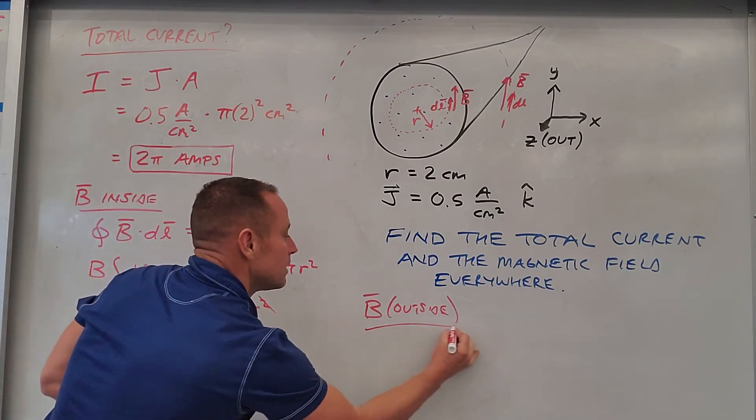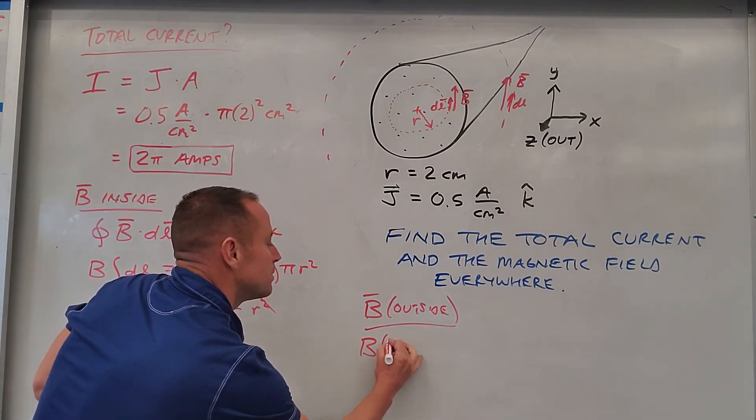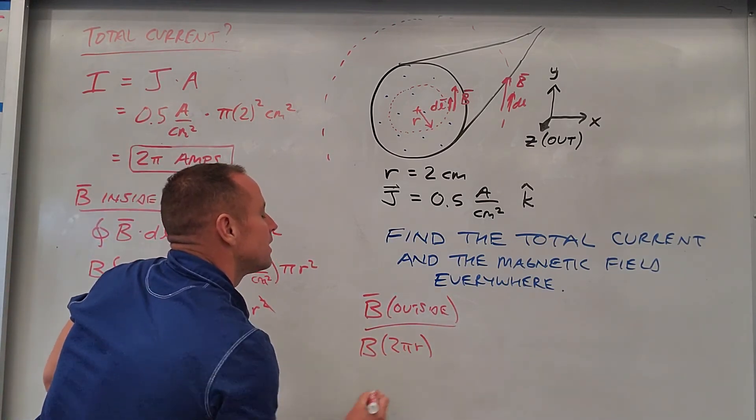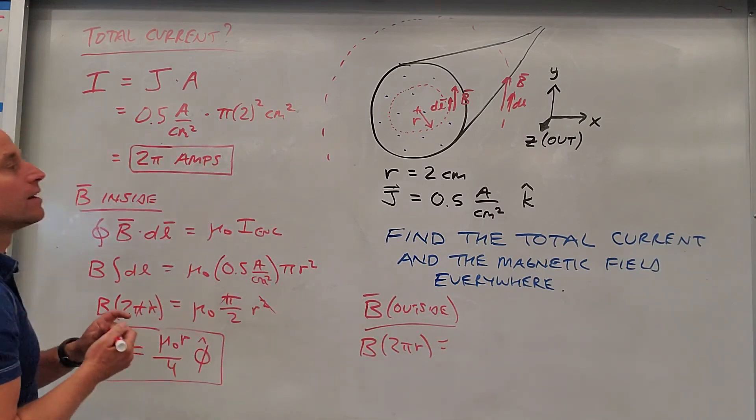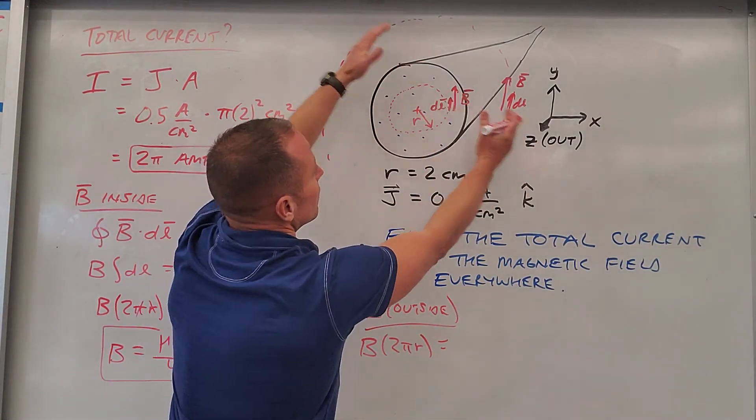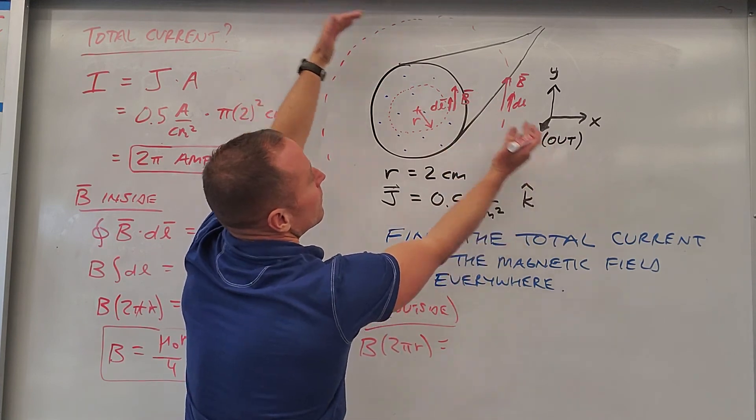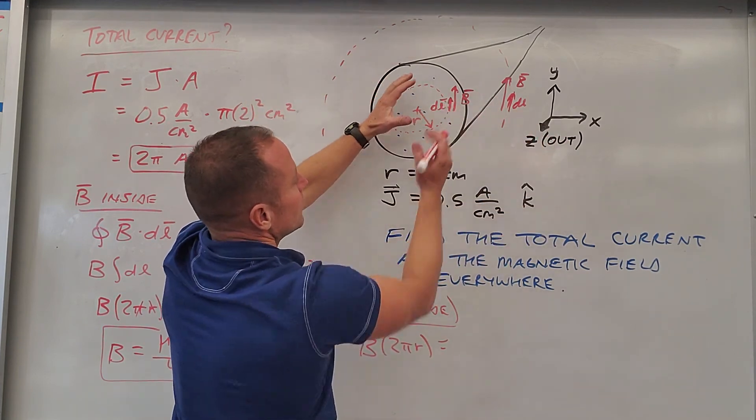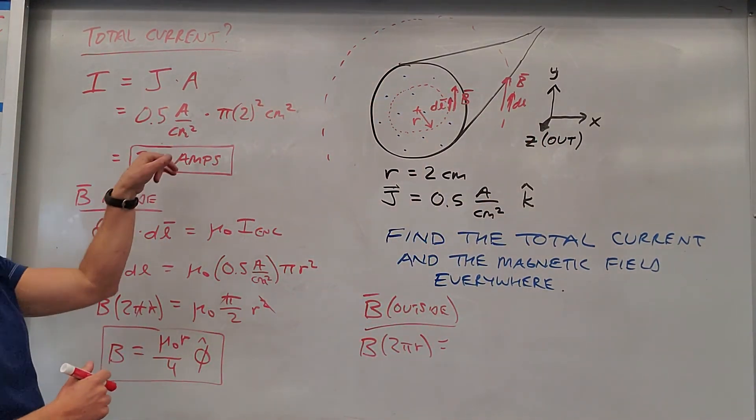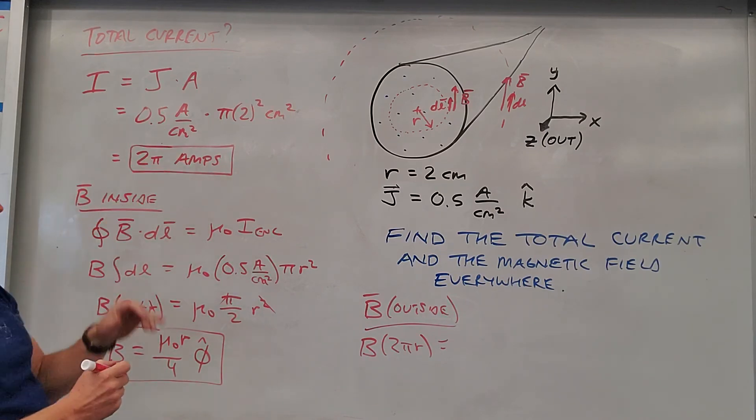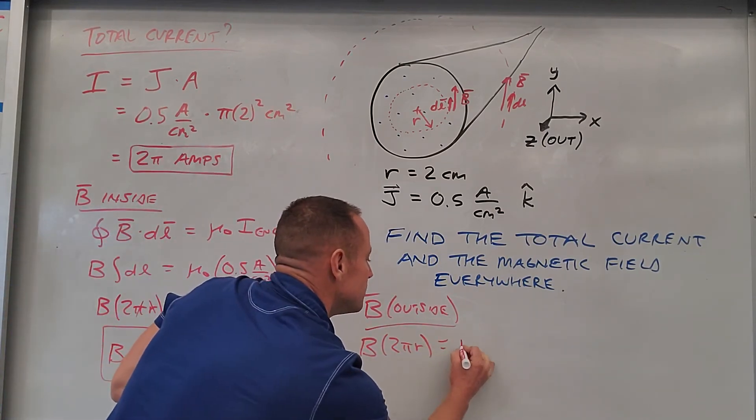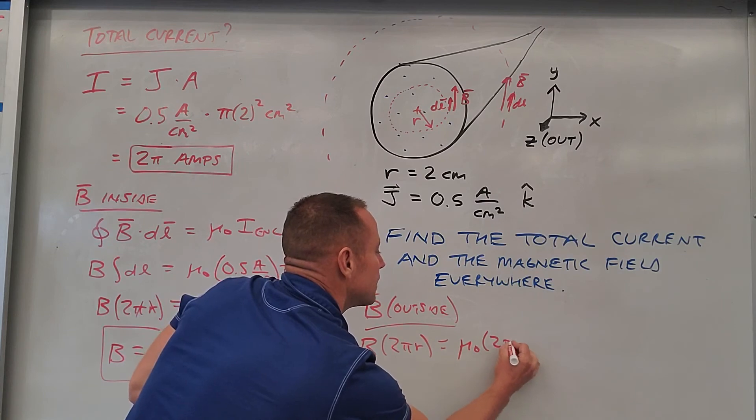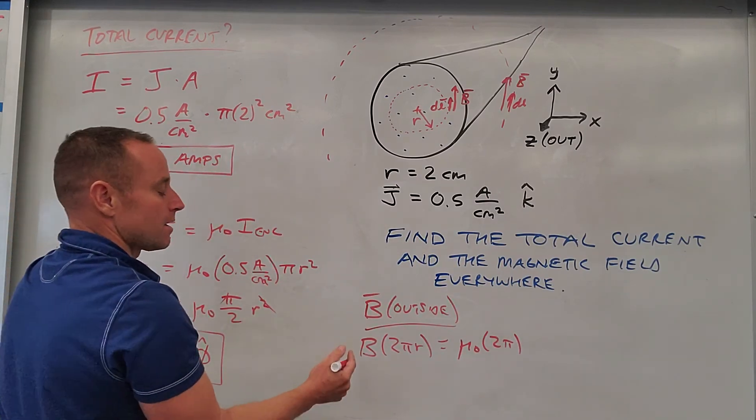So the left-hand side of Ampere's law is going to be the same. So that's good, the left-hand side is going to be B times 2πr. Now the difference is the amount of current that we enclose doesn't anymore depend on the radius of our Amperian loop. We have all of it, and we already know that the enclosed current, the entire current, was 2π amps. So this would be μ₀ times 2π, μ₀ I enclosed.